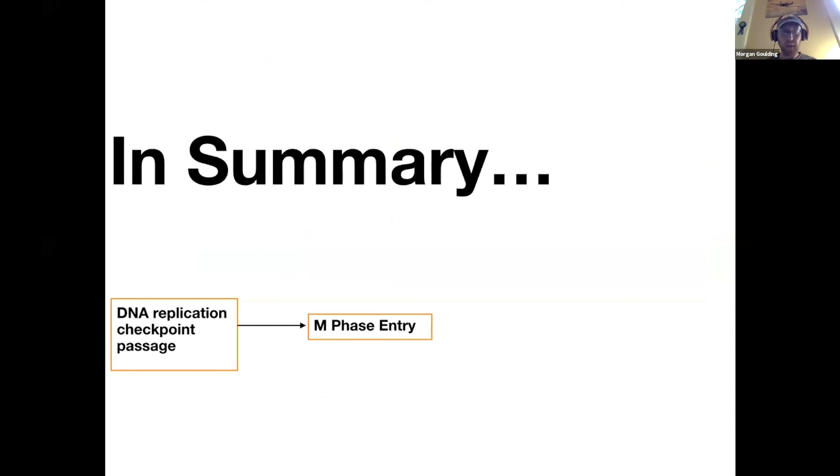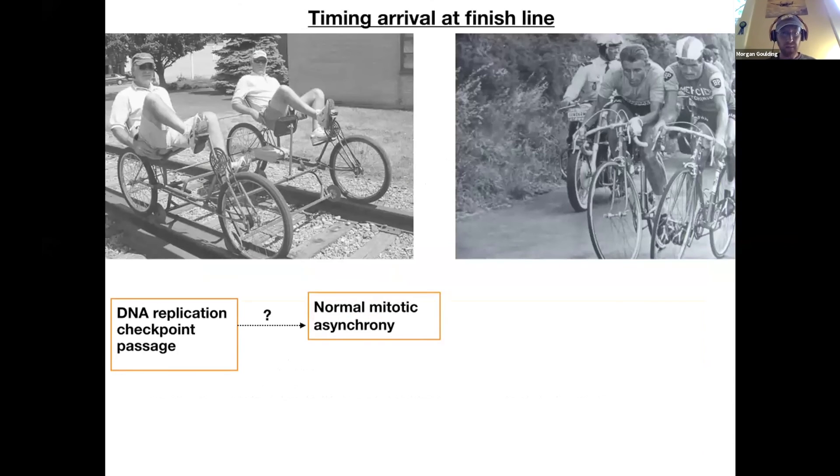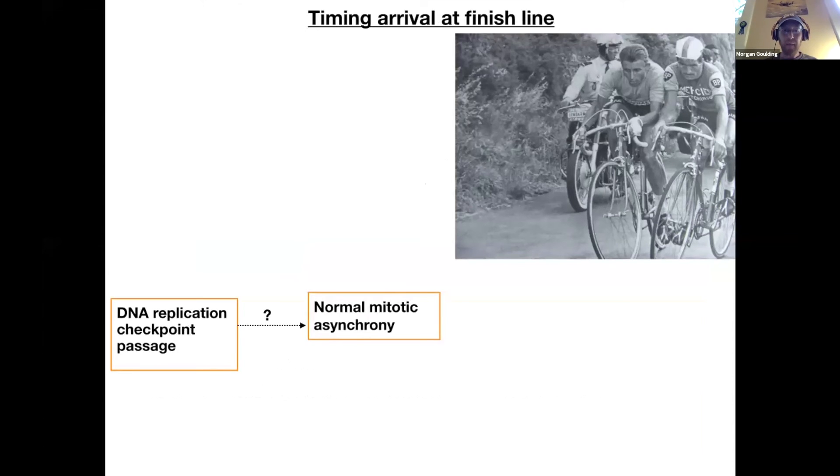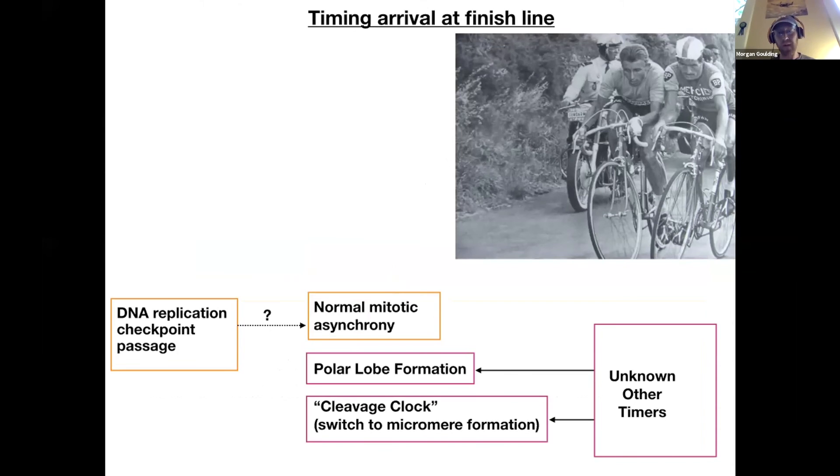So in summary, there is a DNA replication checkpoint. But I am not convinced that it is involved in creating the normal mitotic asynchrony. I am convinced that it has nothing to do with polar lobe formation or the cleavage clock that controls micromere formation. That must be something else.